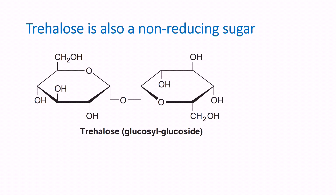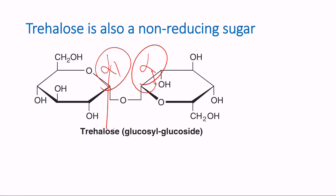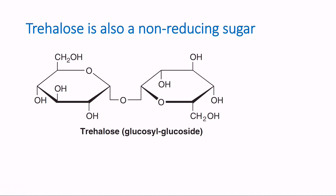Trehalose is also a non-reducing sugar. Trehalose is a disaccharide made up of two molecules of glucose with an alpha 1,1 linkage. The first carbon of glucose is the anomeric carbon. Both anomeric carbons are linked — alpha 1 is linked with alpha 1. Alpha is the orientation, meaning the group is down. So it is a one-to-one linkage, and that is why trehalose is also a non-reducing sugar.